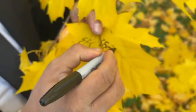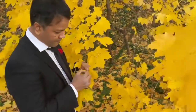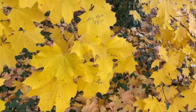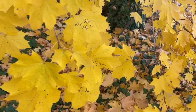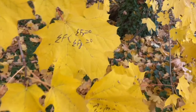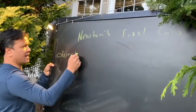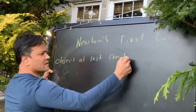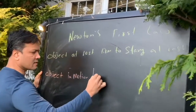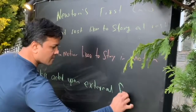Don't forget that Newton's first law has three parts. The first part is inertia. The second part is connected to momentum. And the third part makes a transition to Newton's second law. Object at rest likes to stay at rest; object in motion likes to stay in motion unless acted upon by an imbalanced force.